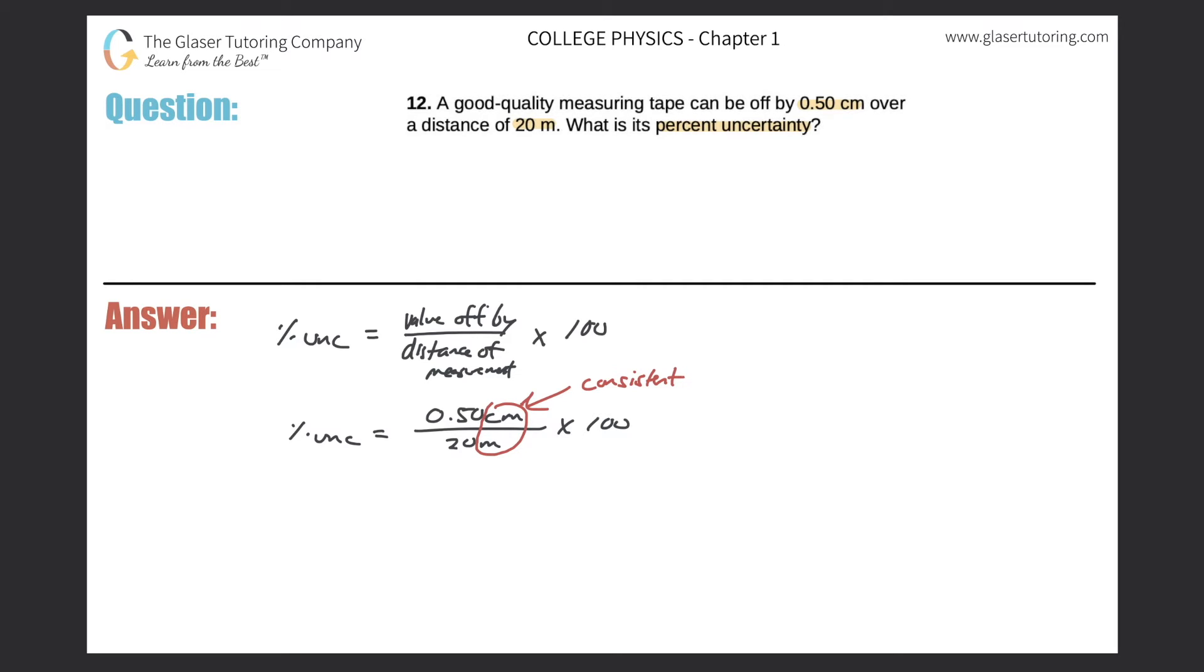Now, it doesn't matter if you take the 0.5 centimeters and convert that into meters, or you took the 20 meters and converted that into centimeters. You would still get the same percent uncertainty. So let me do this. Let me take on the right-hand side, I'm going to start writing. So let me take the 0.50 centimeters and just convert that into meters.